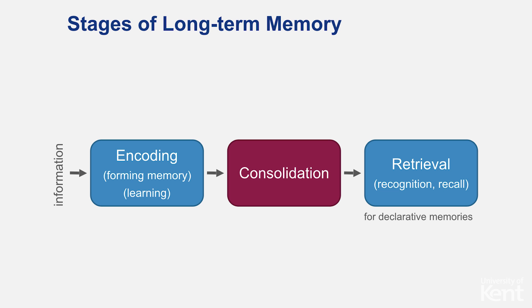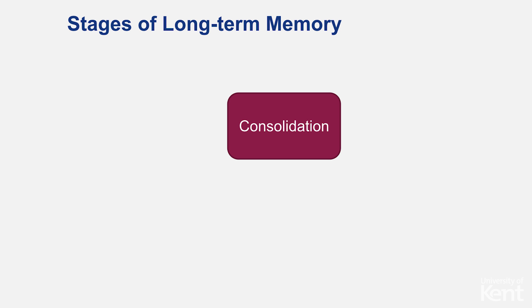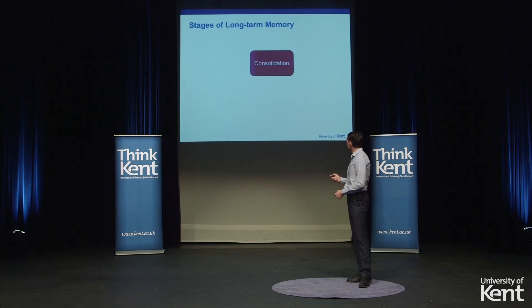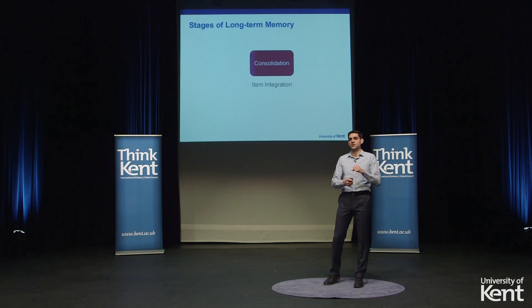What is important is what happens between encoding and retrieval, which is called consolidation. For example, when you memorize something yesterday and recall it today, in between you were awake, you slept, you had physical activities, perhaps went to the gym. All these different activities are part of consolidation and have different effects on the maintenance of information. The main focus of my talk is consolidation. One key function is item integration — where you integrate a new piece of information with your previously stored information.